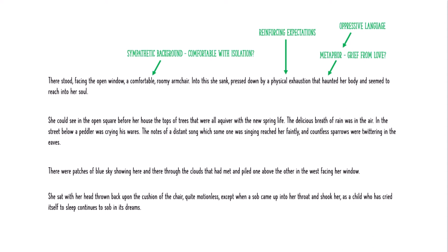What we then have is a description of what she can see out of the window — and this is when our sympathetic background just hits new levels of being completely unsubtle. She's looking out the window: we've got new spring life, we've got 'delicious breath of rain' — that breath as if the rain refreshes places, like how nice the air smells after it's rained because things have been reinvigorated and released. We've got the sound of birds, countless birds. We've got basically constant symbols of freedom and opportunity, all acting as sympathetic background for how she's feeling. Structurally, though, she hasn't realized that yet — she hasn't clued into it herself.